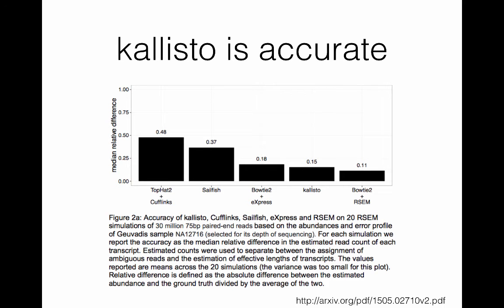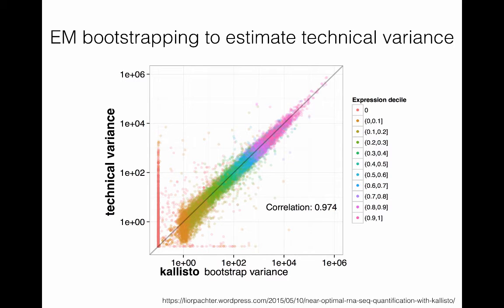Kallisto is also accurate. In this figure, they're showing results where Kallisto is more accurate than TopHat 2 in Cufflinks, Sailfish or Bowtie 2 in eXpress, and slightly less accurate than Bowtie 2 plus RSEM. All of this speed allows Kallisto to engage in a process called bootstrapping, where the data is resampled and subsampled many, many times to get an estimate of the technical variance. This figure shows that the Kallisto bootstrapped variance correlates very well with the actual technical variance in the experiment, allowing you to estimate accurately what the technical variance was so it can be subtracted out, and you can understand what the biological variance was.